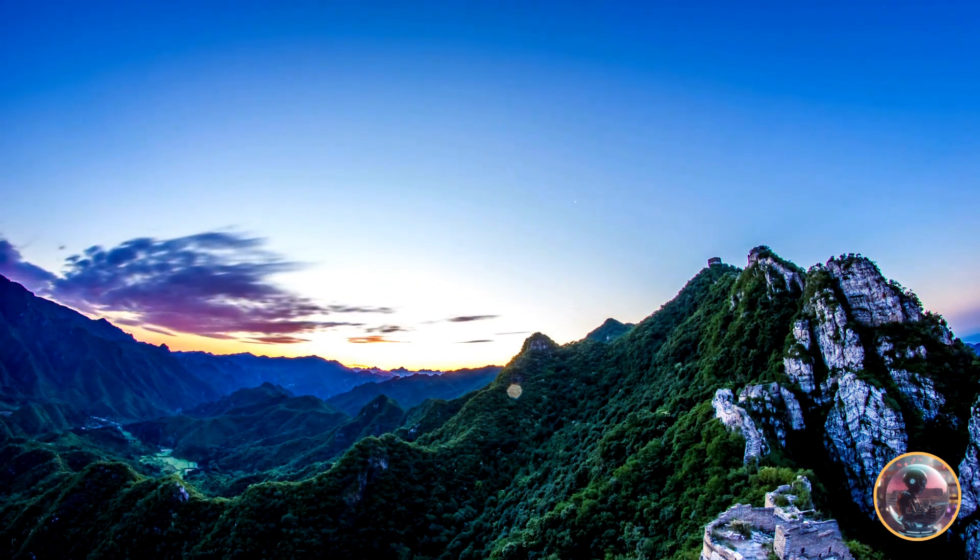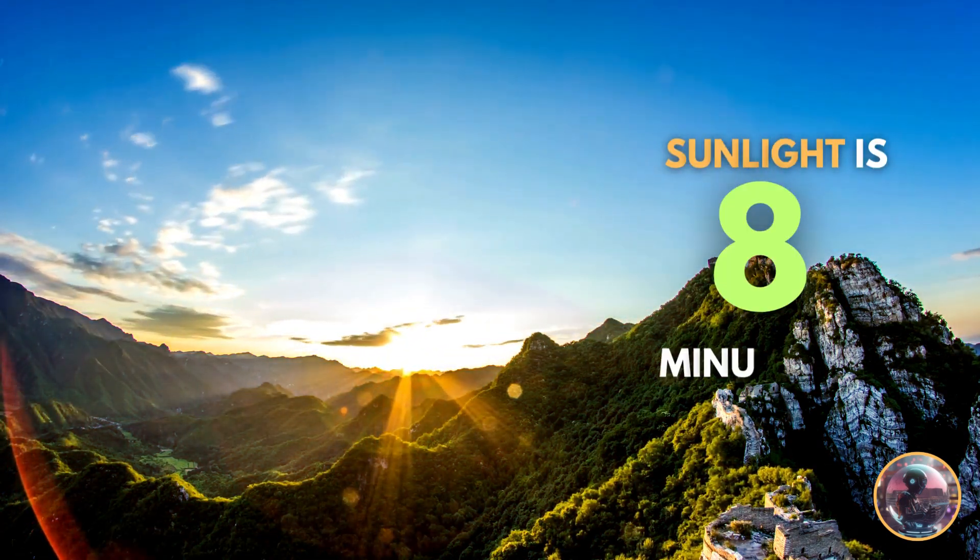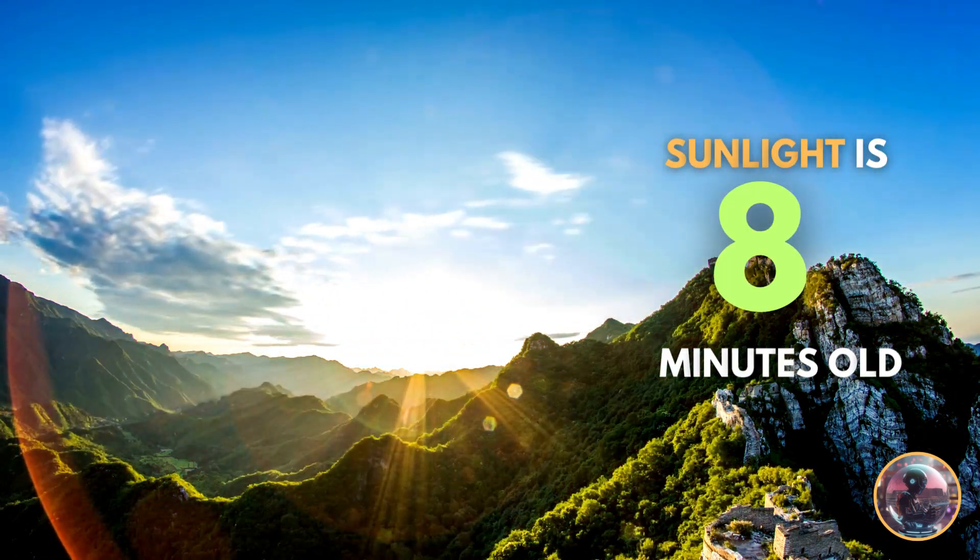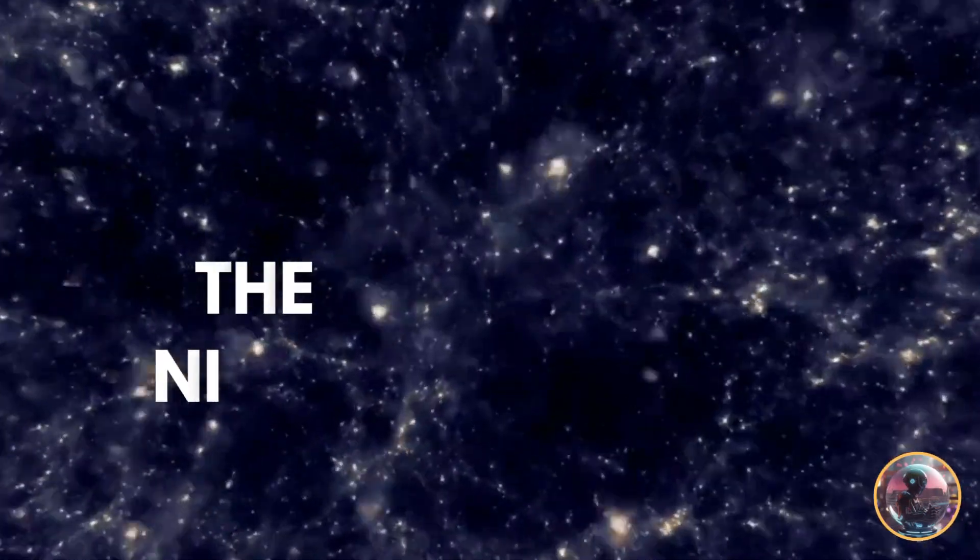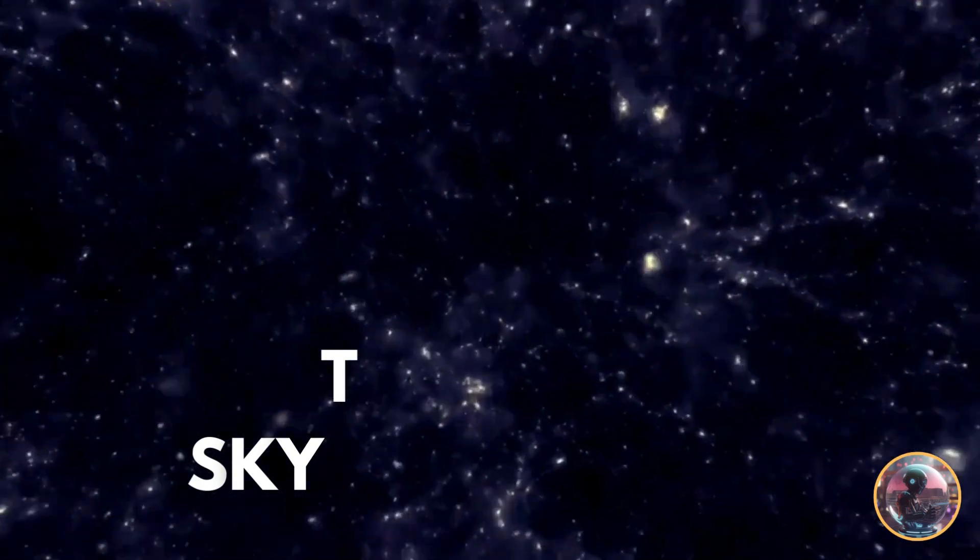Take the sun, for example. The sunlight we enjoy on a warm day is about eight minutes old by the time it caresses our planet. For stars further away, the light we see might have originated dozens, hundreds, or even thousands of years ago.